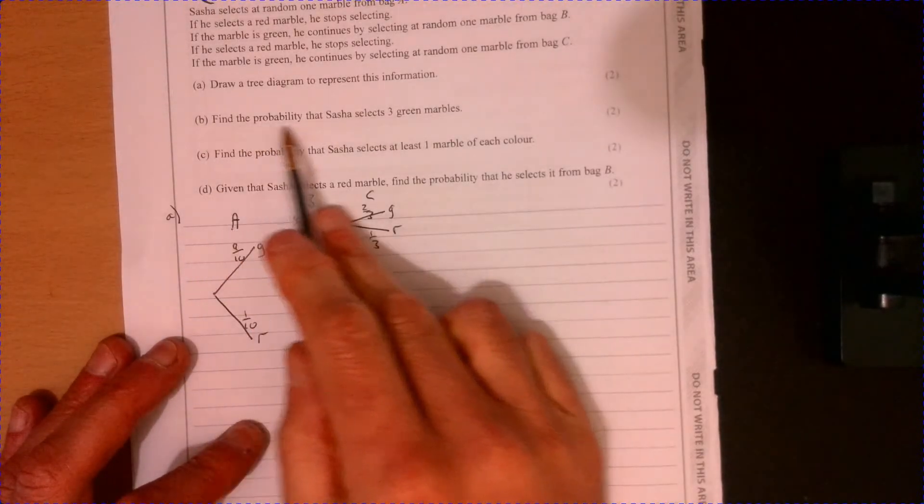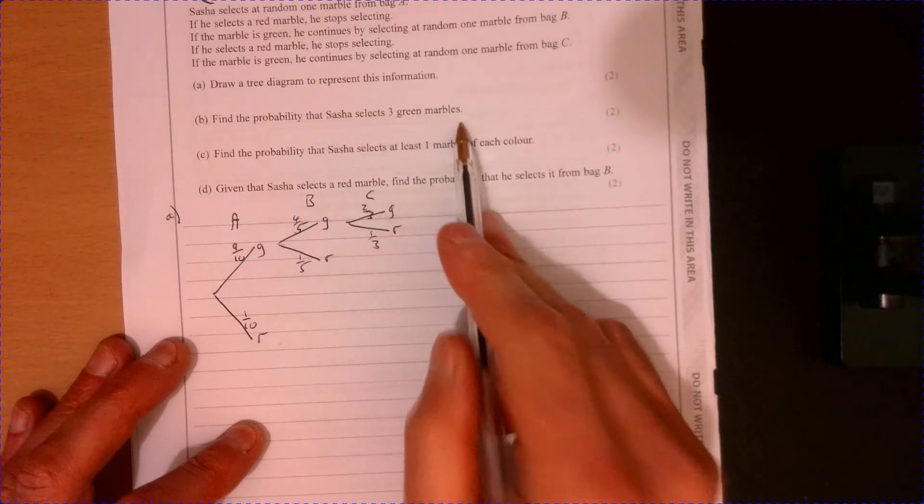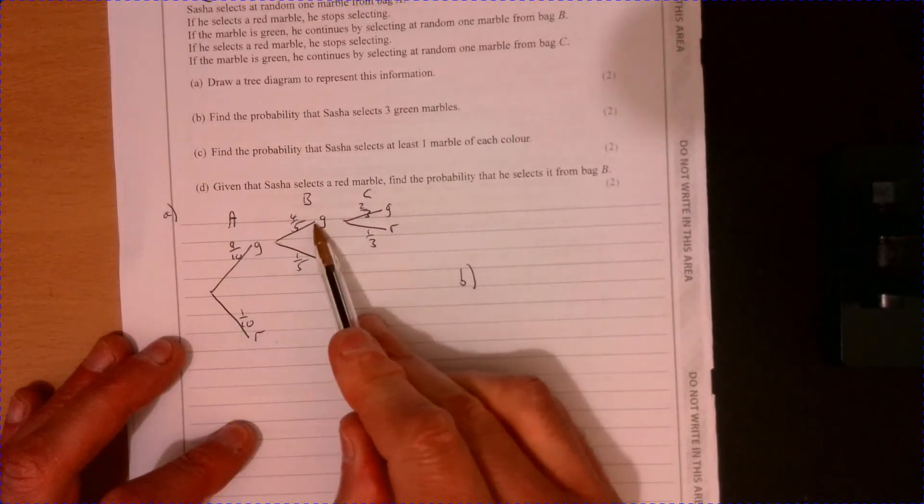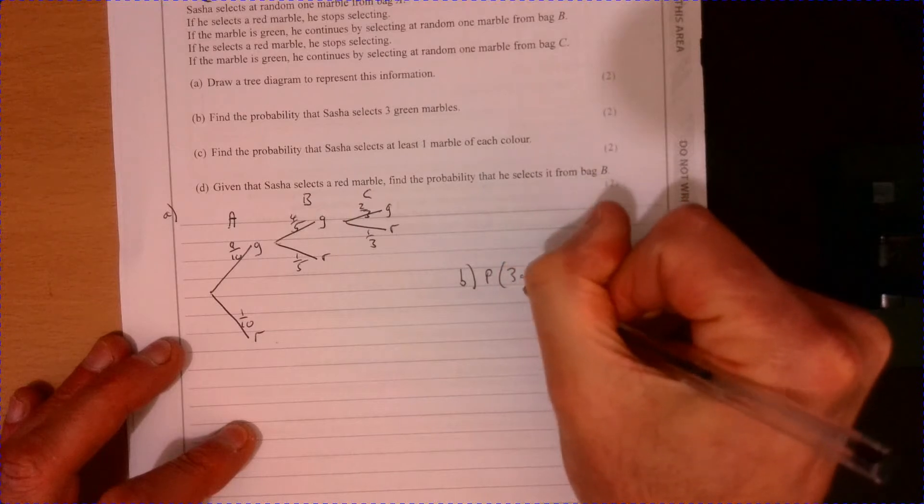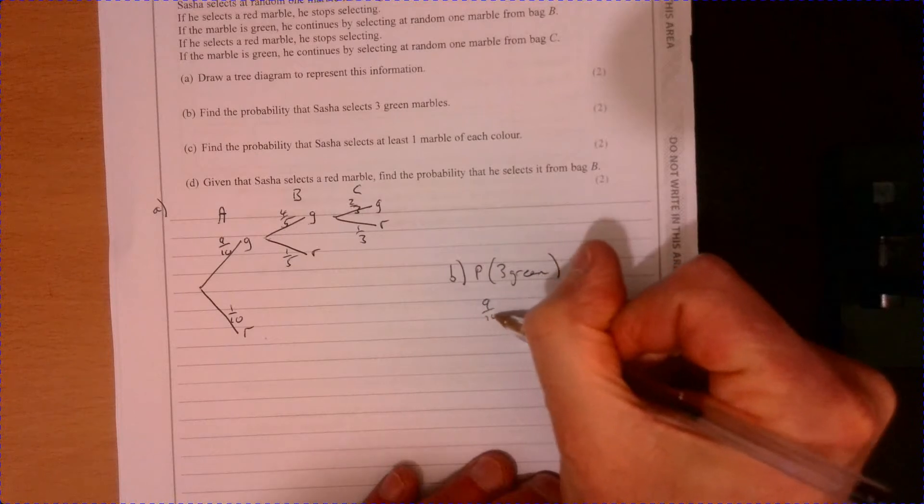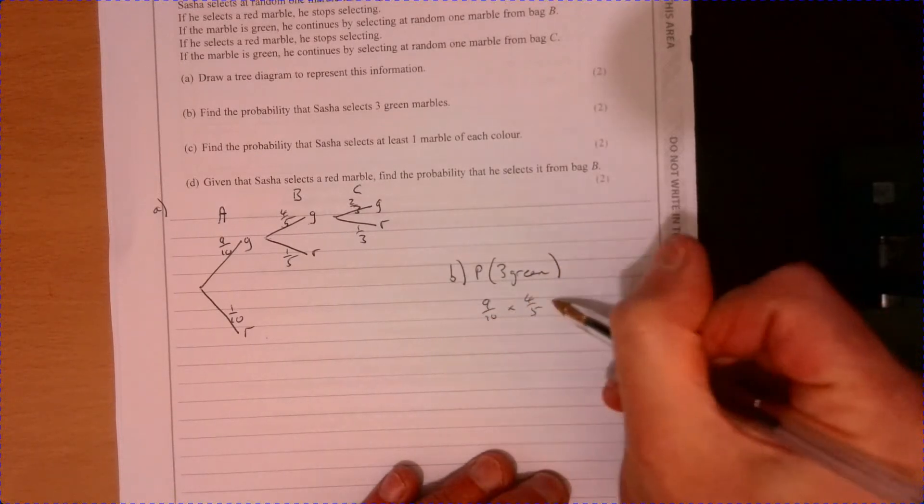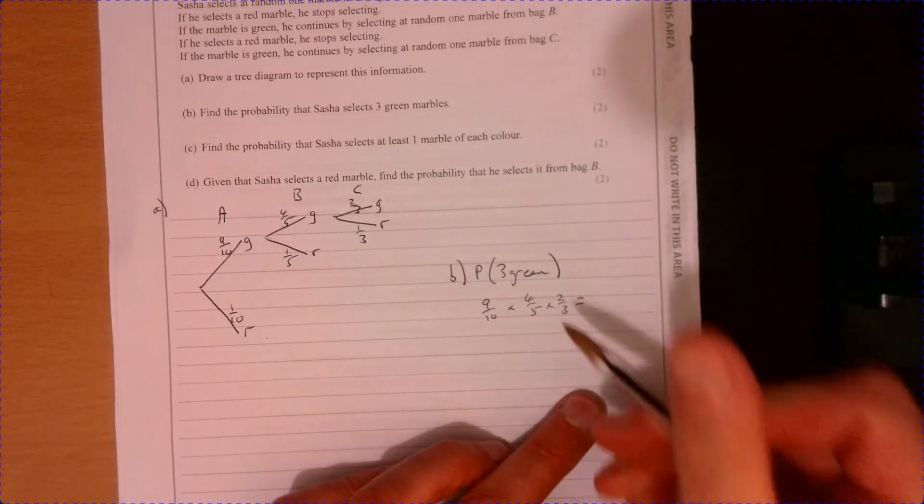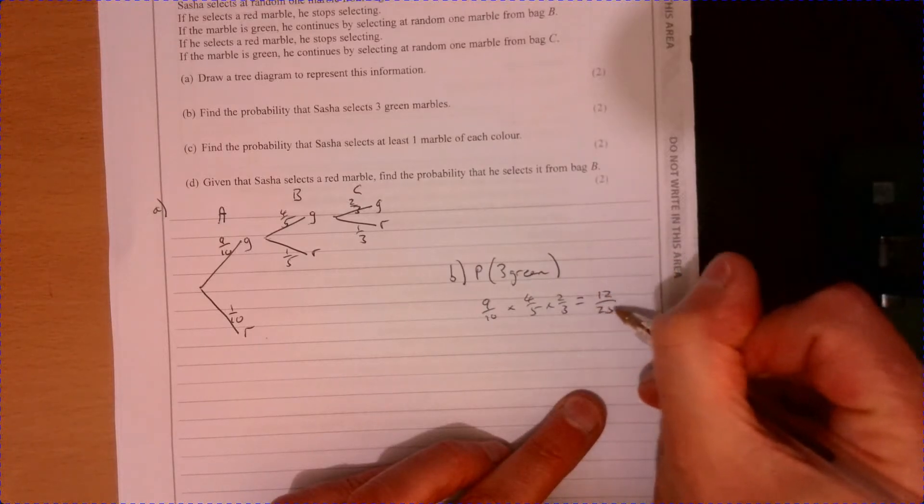Part B. Find the probability that Sasha selects three green marbles. So that's this one multiplied by this one multiplied by this one. So the probability of three green is equal to nine over ten, multiplied by four over five, multiplied by two over three.